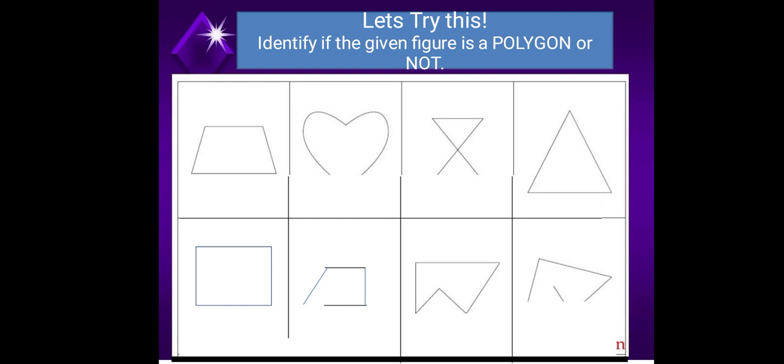Fourth image. Correct. It is a polygon, obviously, because it is a triangle. It is a closed figure and the sides here is straight lines.